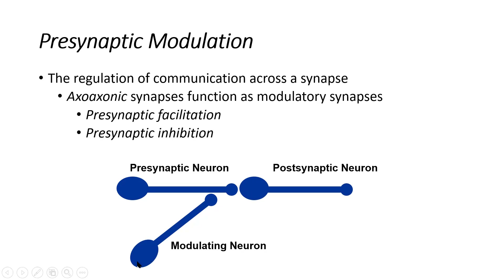The modulating neuron influences how much neurotransmitter is dumped by the presynaptic neuron into the synaptic cleft, and by extension influences whether or not the postsynaptic neuron receives a stronger or weaker signal and whether or not we get to threshold. It's really important to understand that the modulating neuron does not immediately contribute to a membrane potential change — it only modulates the presynaptic neuron and specifically how much neurotransmitter is being released into that cleft.